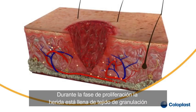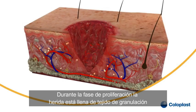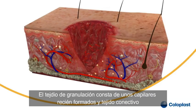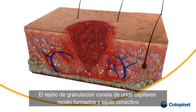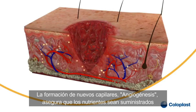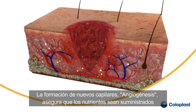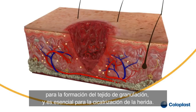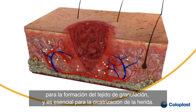During the proliferation phase, the wound is filled with granulation tissue. Granulation tissue consists of newly formed capillaries and connective tissue. The formation of new capillaries, angiogenesis, ensures that nutrients are supplied for granulation tissue formation and is essential for wound healing.